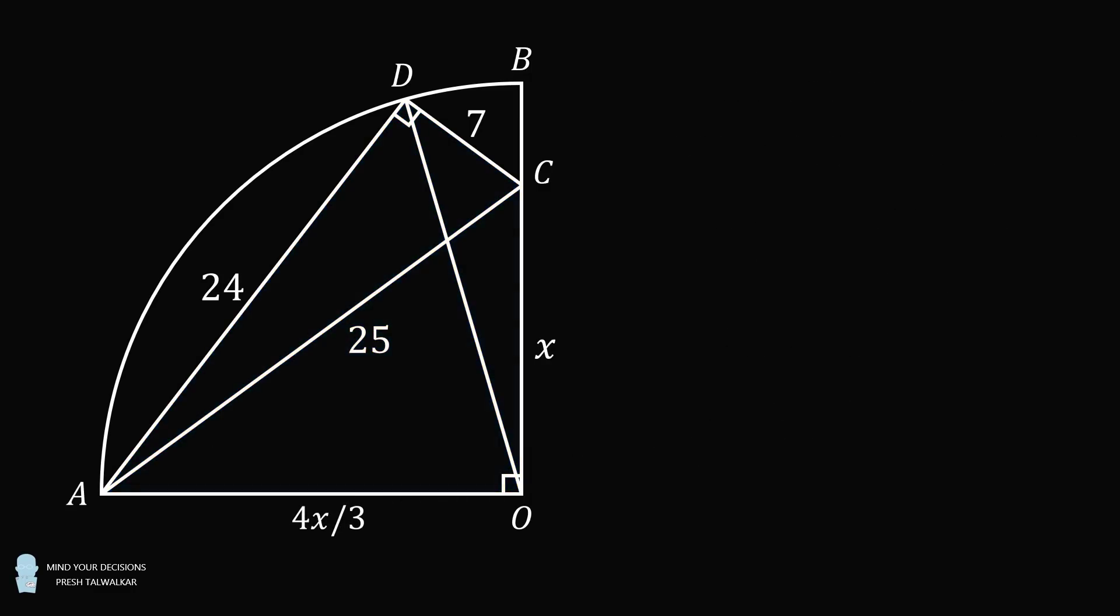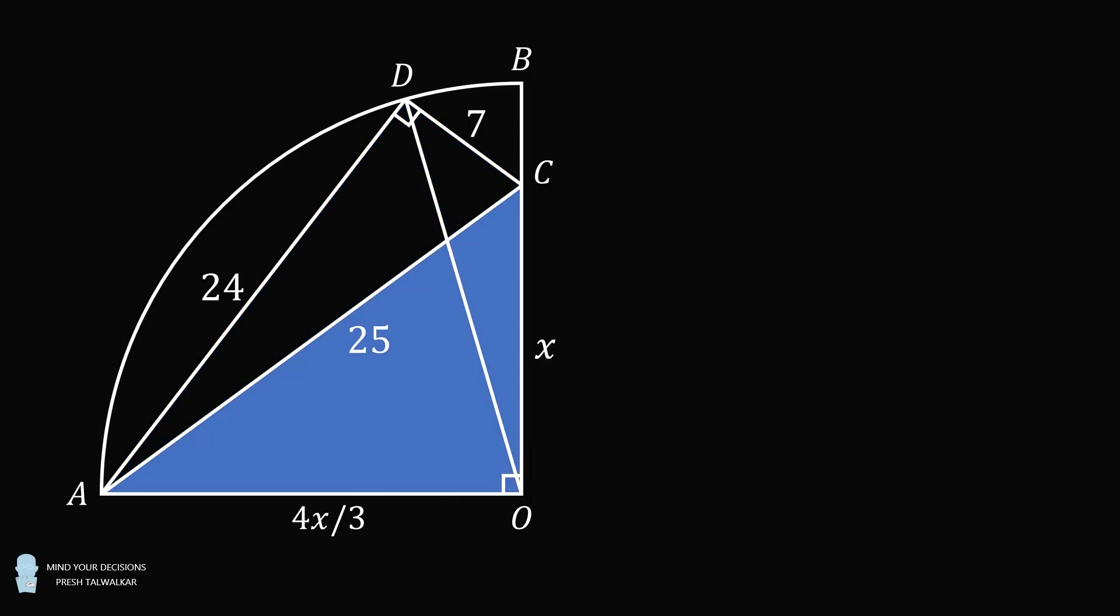From here, we will again focus on triangle AOC, which is a right triangle. We have X squared plus the quantity 4X over 3 squared is equal to 25 squared. We can simplify this equation and carefully solve for X. We need X to be a non-negative value, so we'll take the positive square root and get that X is equal to 15. So that's one more way to solve the problem.